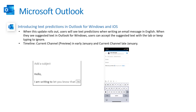Another Outlook update is text predictions, which has been available in Gmail for many years and is now being introduced into the Microsoft offering. This will come out for the Windows client and also for iOS. You can turn this off with a group policy setting for the Windows client, as some users may find the predictions annoying and request that you disable it. I'll have links on how to do that in my documentation online.